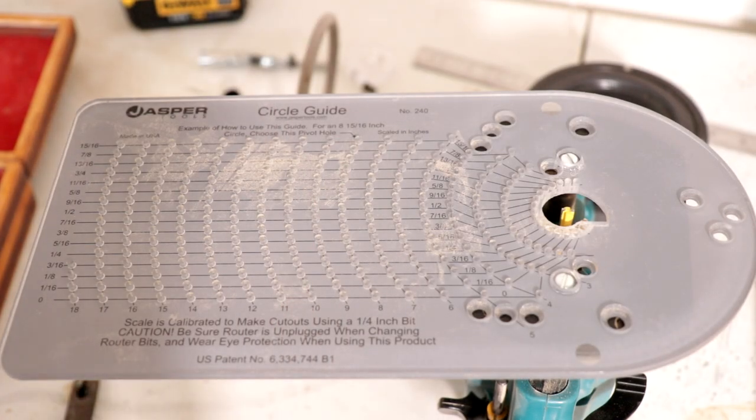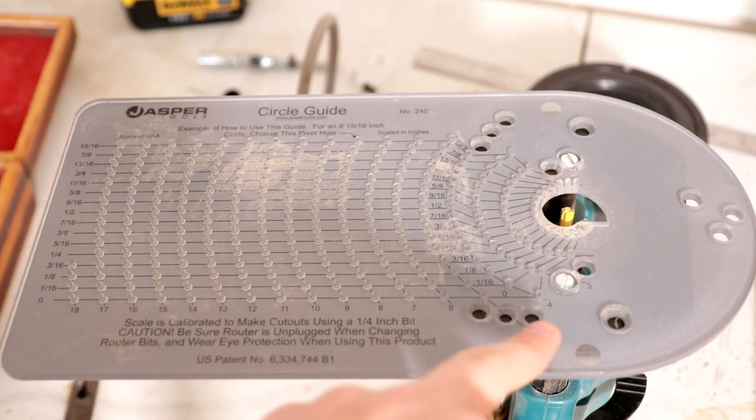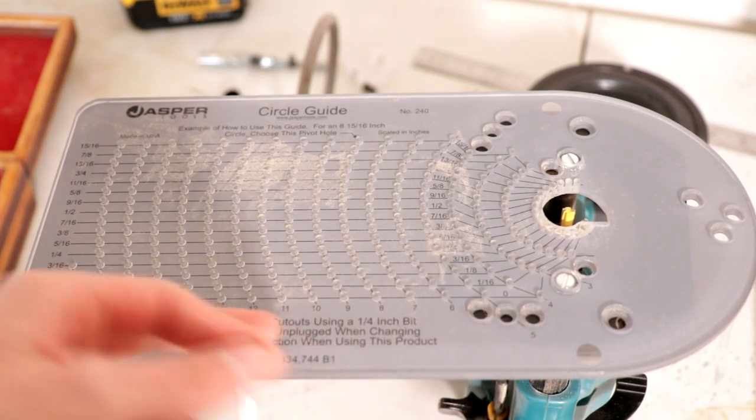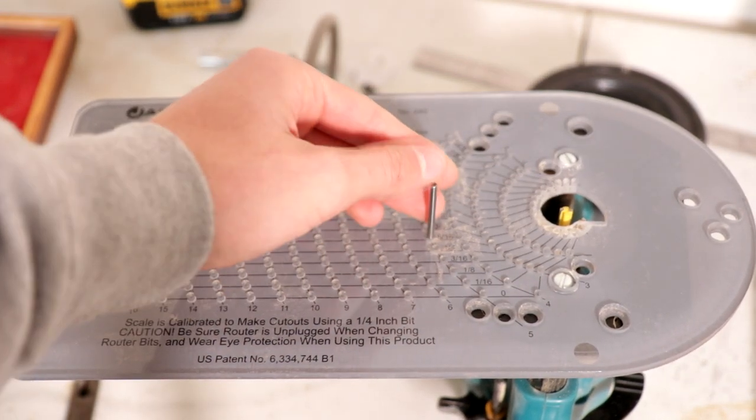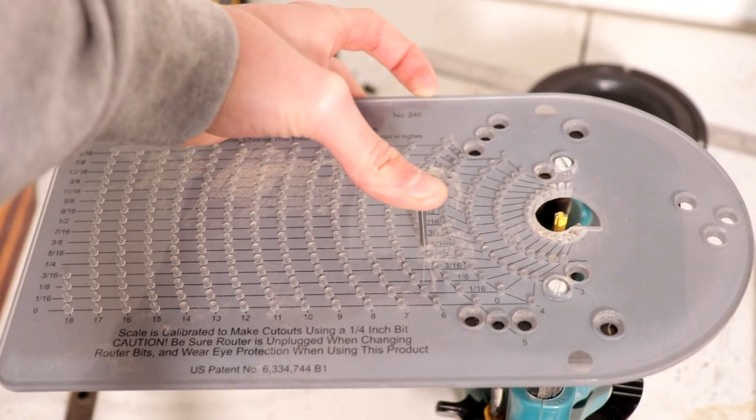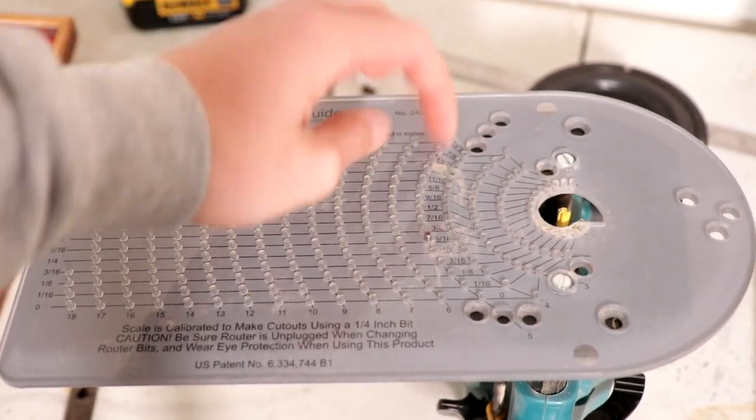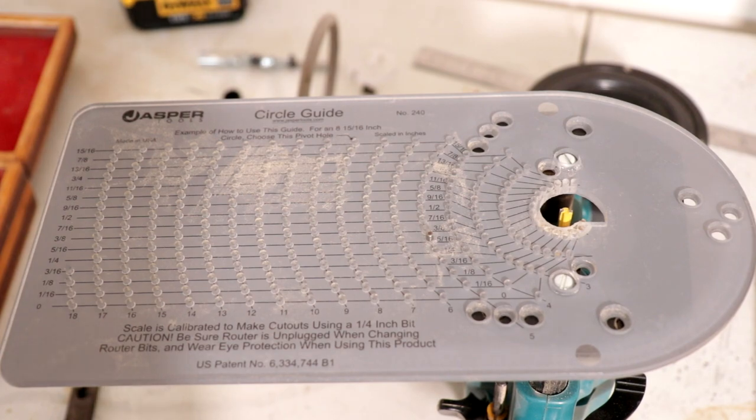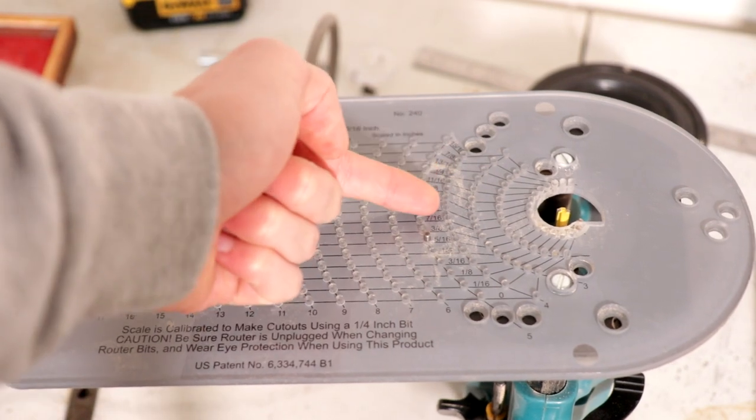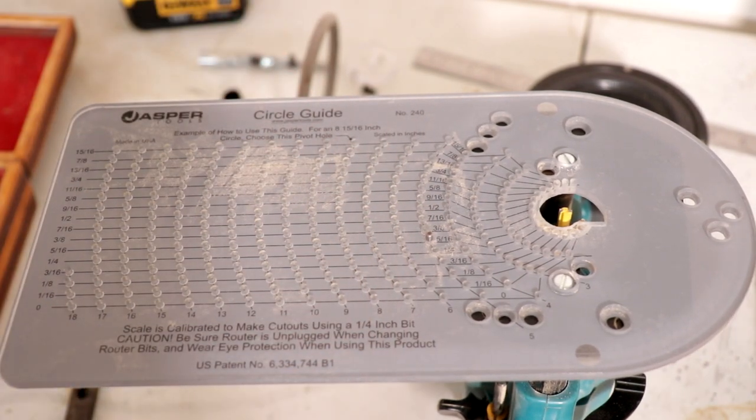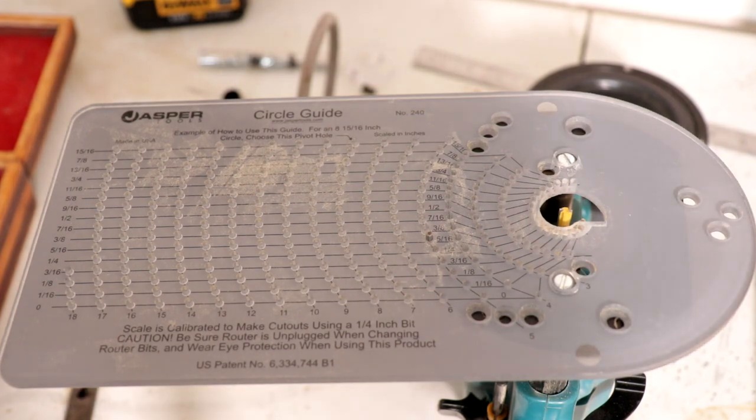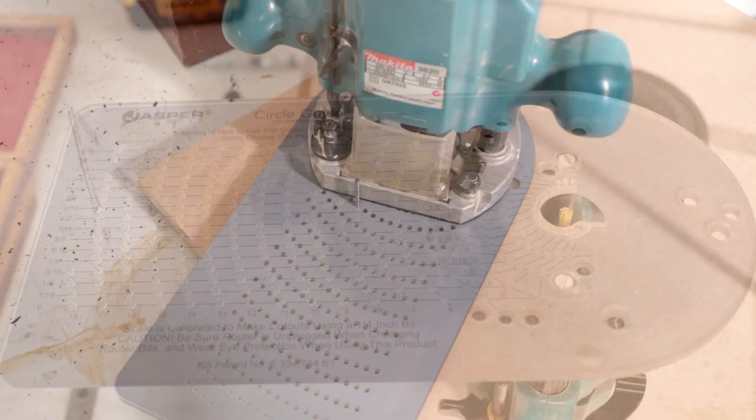So this jig is very, very easy to set. We just said five inches and five sixteenths. So we come all the way down here to five inches, which is just here, and then we come up here to five sixteenths and bang, we just slide this little thing in and then we drill our hole in the timber where we want the center of the speaker hole. It slots into the hole and then we get the perfect cutout. It's so simple, so easy. And that's why I absolutely love using the circle jig from Jasper to cut out speaker holes.